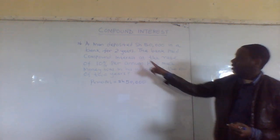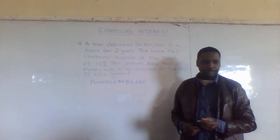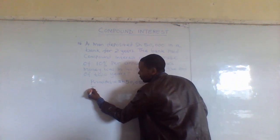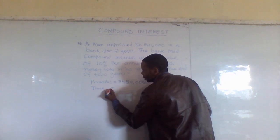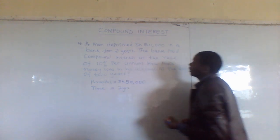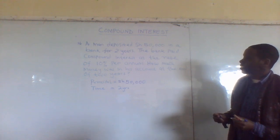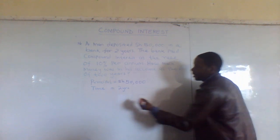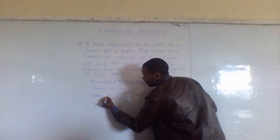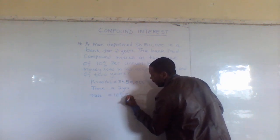And then two years — what do you call two years? That is the time, the time the money stayed in the bank. Two years. Then the bank paid interest at the rate of 10%. The rate was 10% per annum.